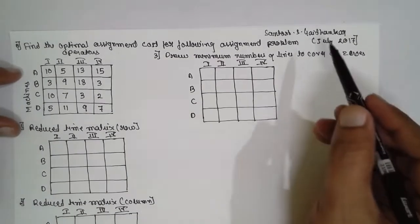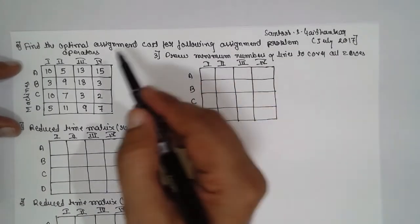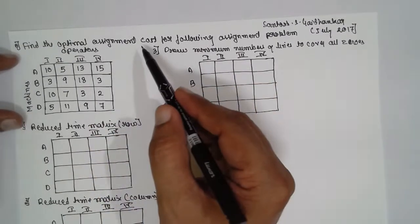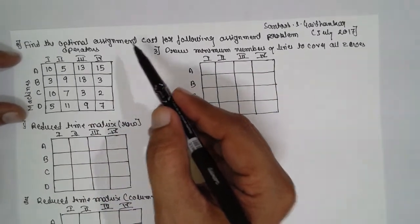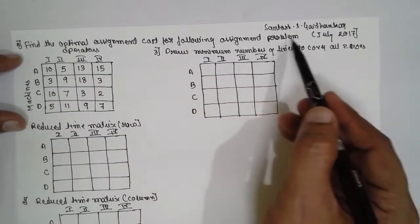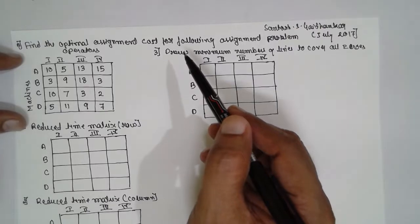I am Satyash Gayankar. Today I am teaching you operation research. In that, the assignment problem by using Hungarian method. This is the problem of minimize concept. Find the optimal assignment cost of the following assignment problem. By using the minimize concept you have to find this one.